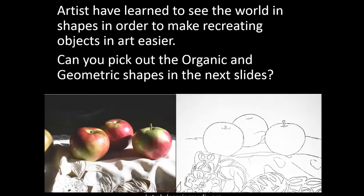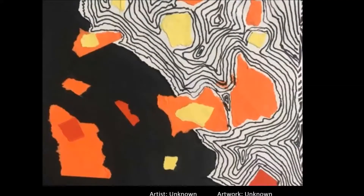Shapes help artists break down the world around them so it is easier to convey. Looking at this first artwork — the torn little pieces of paper make up organic shapes, very difficult to recreate using math, with wavy, curvy, fluid lines. Looking at this second artwork — it is more geometric: evenly spaced lines making rectangles, triangles, squares, and circles with straight edges, easy to recreate using math.